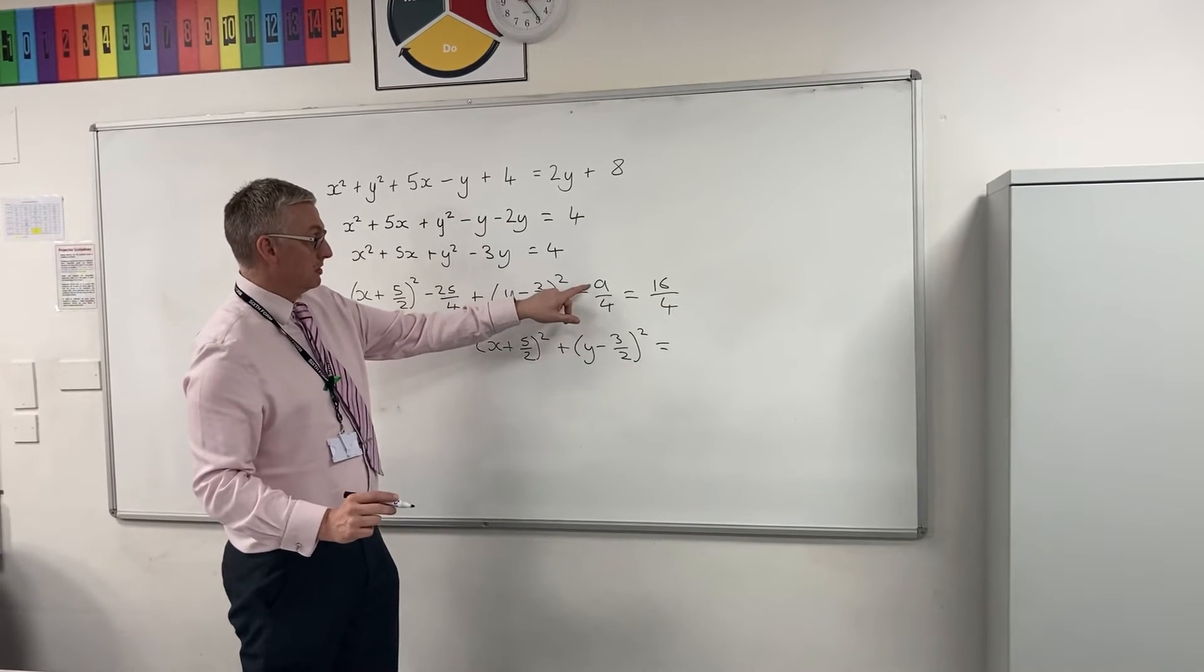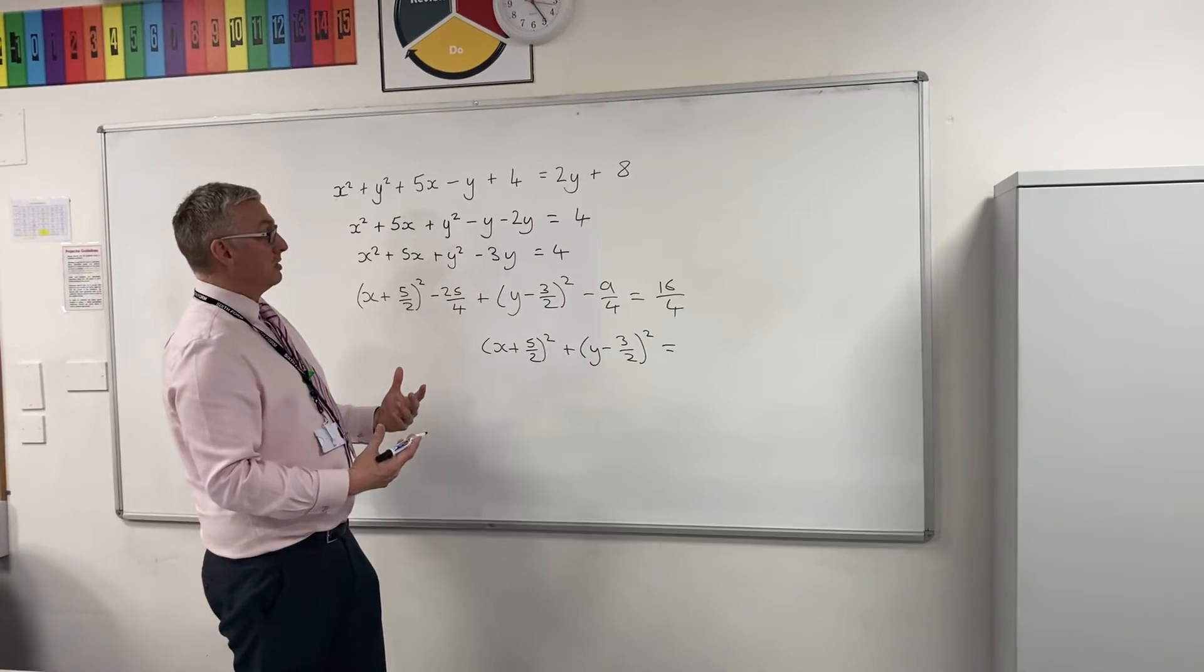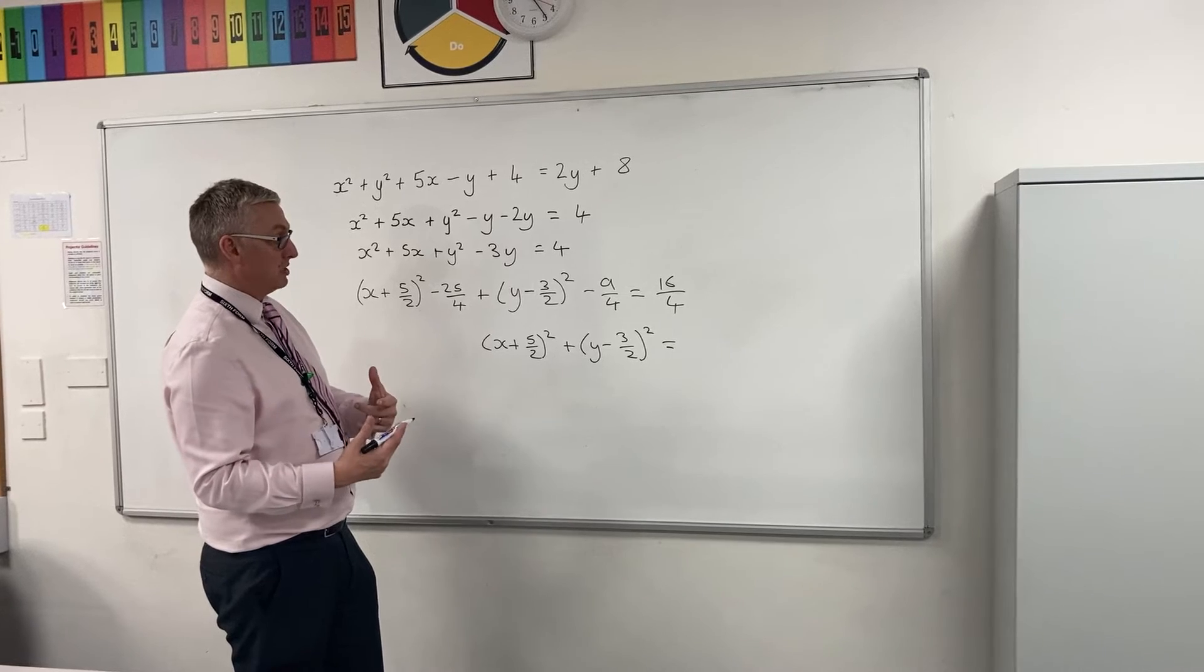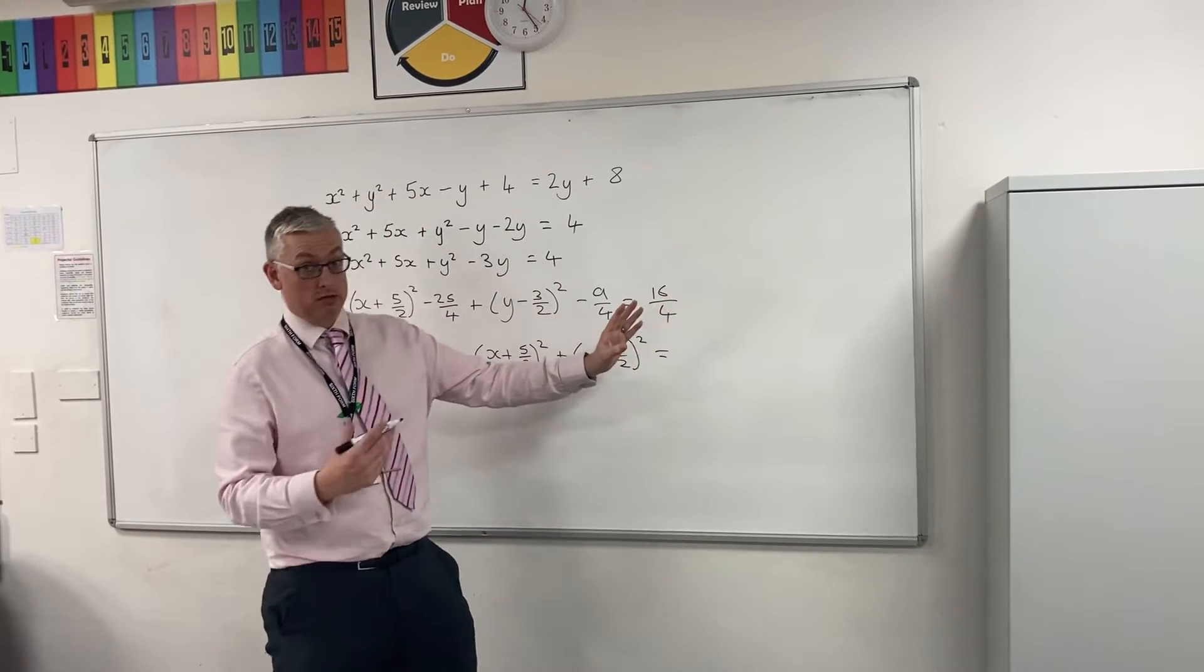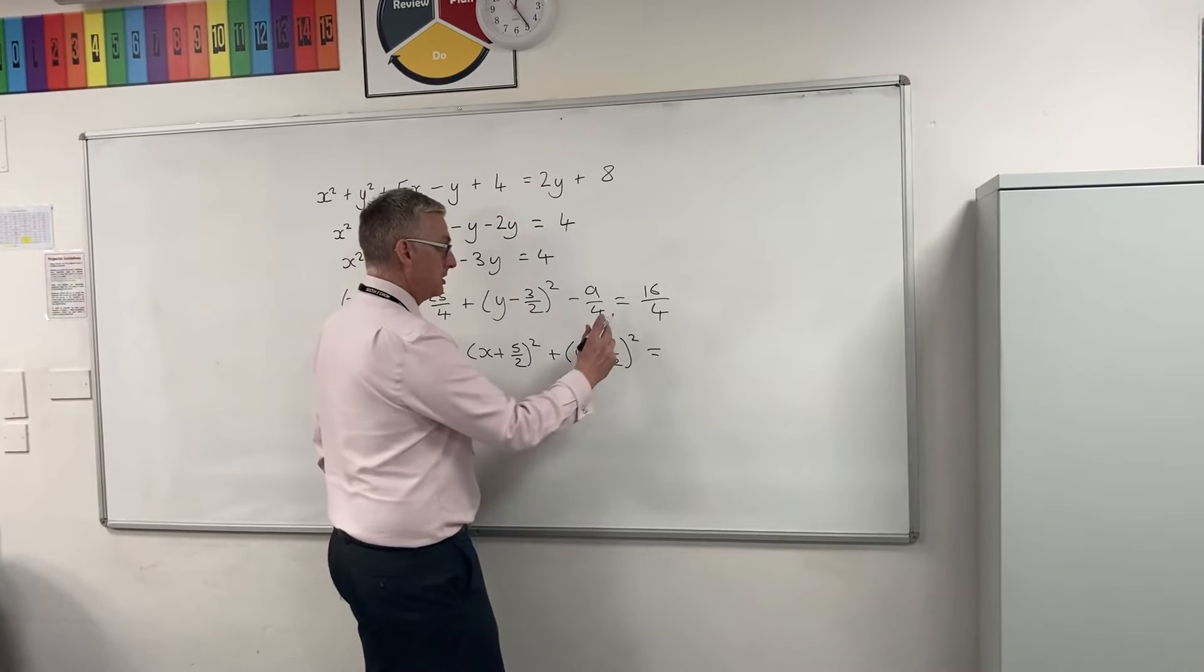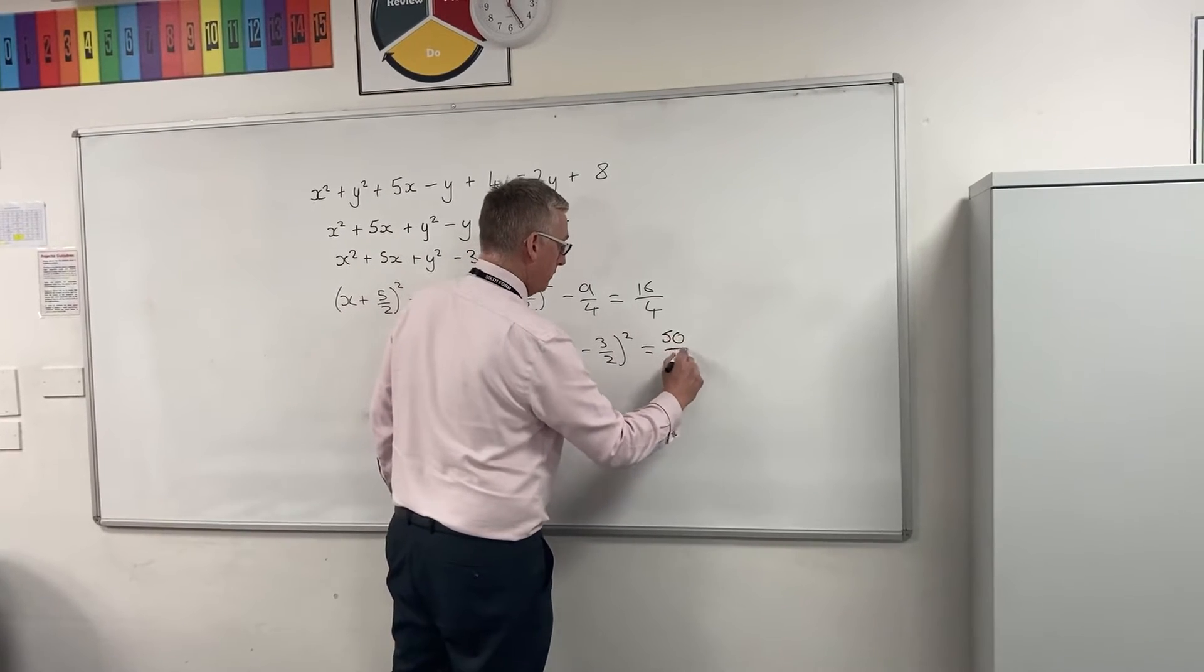Equals negative 25 over 4, negative 9 over 4, that gives me negative 34 over 4. If I move that over, add it to that, I get 50 over 4.